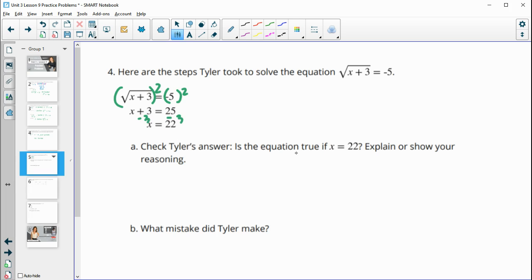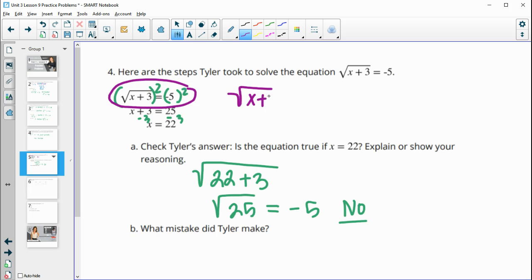So check Tyler's answer. He got 22. So check 22 in here. 22 plus 3, the square root of 25, is that equal to negative 5? That's no, because the square root of 25 is positive 5. So his solution does not work. What mistake did he make? He made the mistake of not recognizing that he had a square root equal to a negative number. He shouldn't have squared both sides. You can't have a square root equal a negative number. It means no solution.